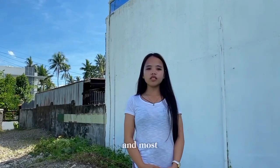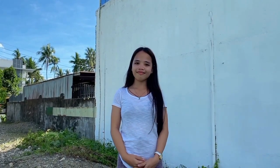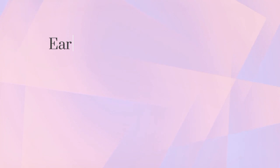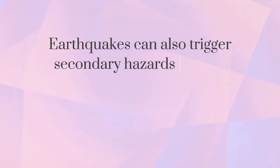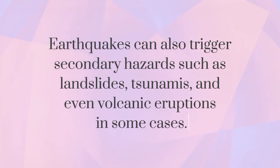The primary and most devastating effect of an earthquake is the destruction it can cause to buildings, infrastructure, and other man-made structures. This can result in loss of lives, displacement of people, and economic losses. Earthquakes can also trigger secondary hazards such as landslides, tsunamis, and even volcanic eruptions in some cases. By employing these mitigation strategies, the effects of earthquakes can be minimized and the resilience of communities can be enhanced.